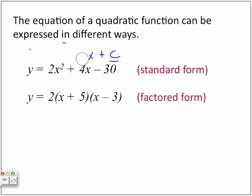Another example here is y is equal to 2 open brackets x plus 5 close brackets open another set of brackets x minus 3. And this is what we call factored form. And we will be looking at the factored form of quadratics in future lessons.